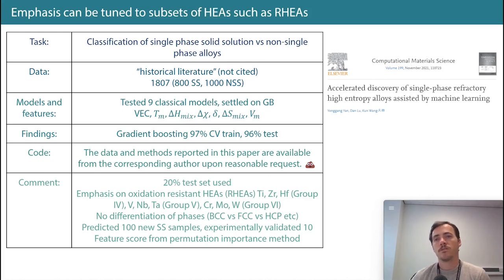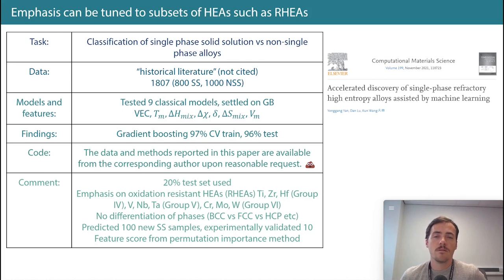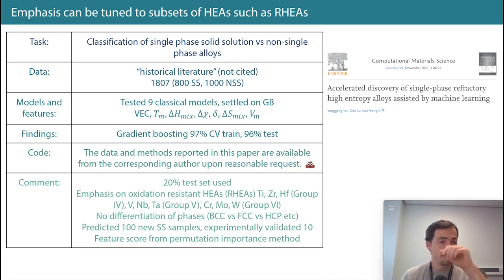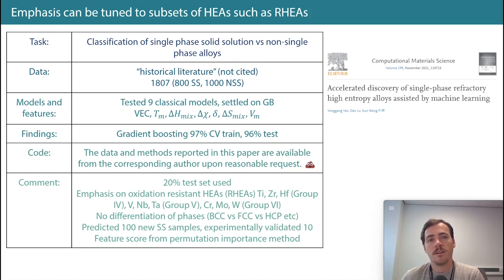How about this paper? It's another classifier — by Yan in 2021 in Computational Materials Science. Full disclosure: I'm an editor there, and I think it's a great journal. Their task was classifying single-phase solid solution versus non-single-phase alloys.